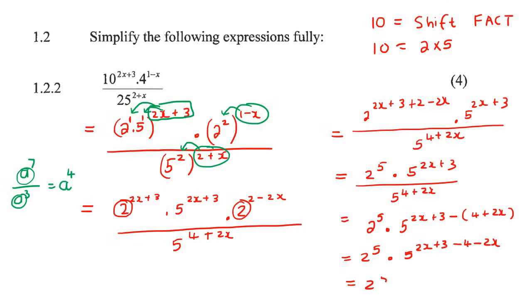And then this is going to be 5 to the 2x plus 3 minus 4 minus 2x. And so that'll be 2 to the 5. And then these two x's are going to cancel. And then you're going to have 3 minus 4, which is minus 1. And so what we then do, because we don't want to have negative exponents, so what we'll do is we'll put that back down at the bottom. So we'll say 2 to the 5 and then over 5 to the 1.